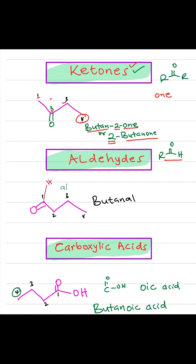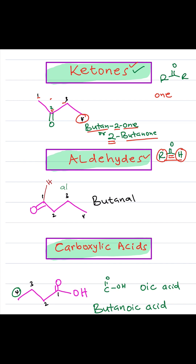Next, we look at aldehydes. Aldehydes have an alkyl group on one side, a carbonyl in the middle, and then a hydrogen on the other side. In this example, the carbon with the carbonyl is carbon number 1, then 2, 3, and 4 — so it has 4 carbons, the name becomes butane, and because it's an aldehyde, we finish with AL, so the name becomes butanal.